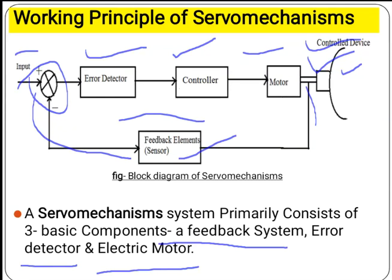The error signal is given to the controller, which produces a control signal to manage the output according to the requirement and drives the motor. Finally we are getting 180 degrees. Again this signal goes towards the feedback signal and the comparator compares them — when the difference is zero, it will stop. This is the overall process of the servomechanism.